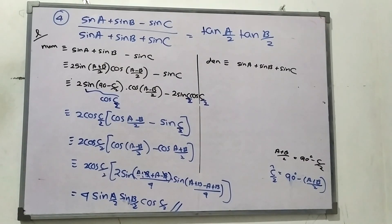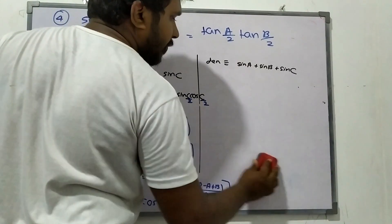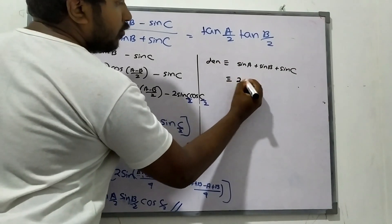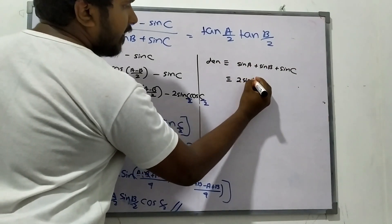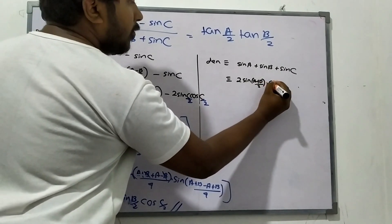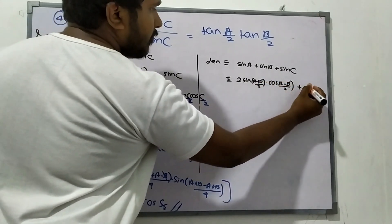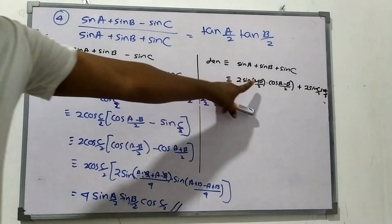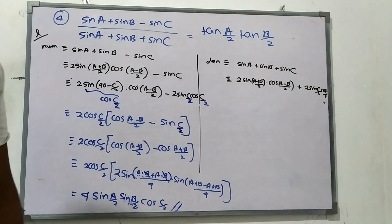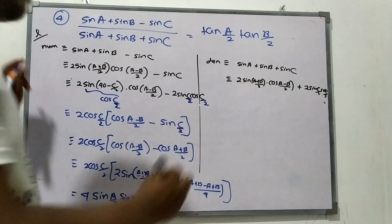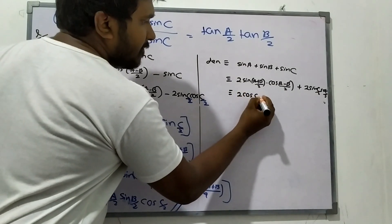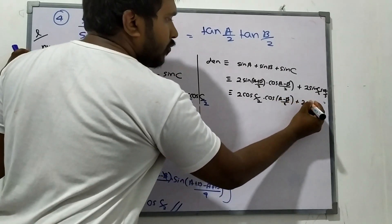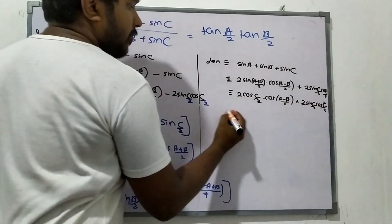And the denominator: it's 2 sin A plus B by 2 times cos A minus B by 2, plus 2 sin C by 2 times cos C by 2. Since A plus B by 2 equals 90 minus C by 2, this becomes 2 cos C by 2 times cos A minus B by 2, plus 2 sin C by 2 times cos C by 2.